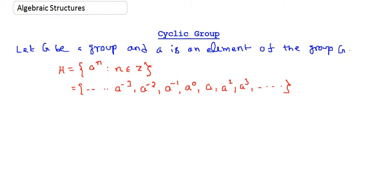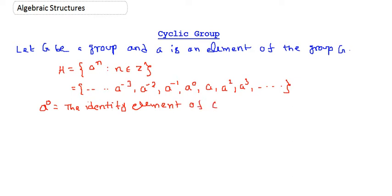A few things to note: a^0 is the identity element of the group G. When we are talking about group theory, a^0 is taken to be the identity element of G.